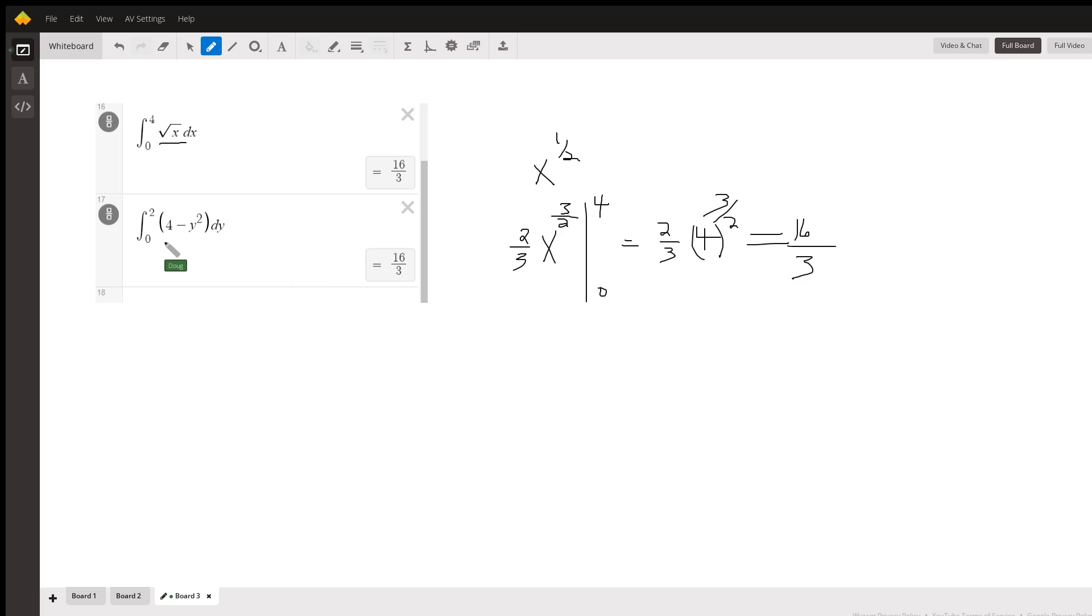Similarly down here, find the antiderivative of each term evaluated from 0 to 2. I'm going to leave that for you. Hope that helped. If you have any questions, post a comment.